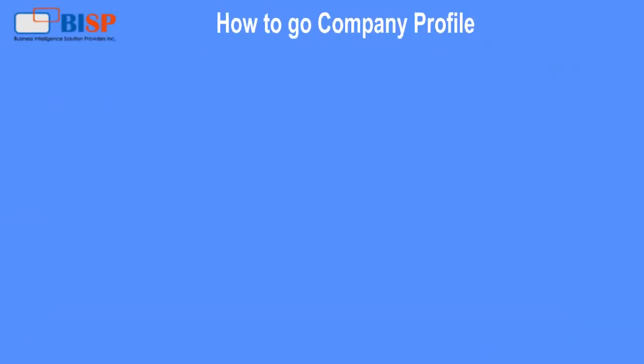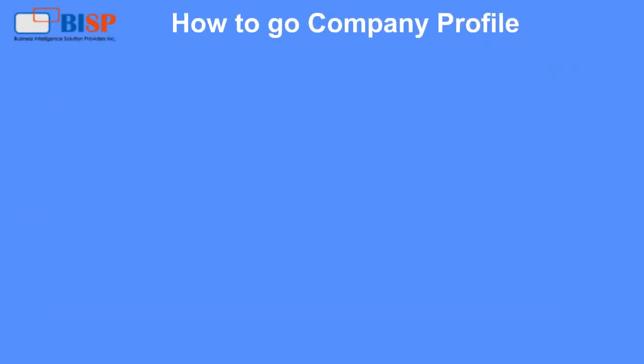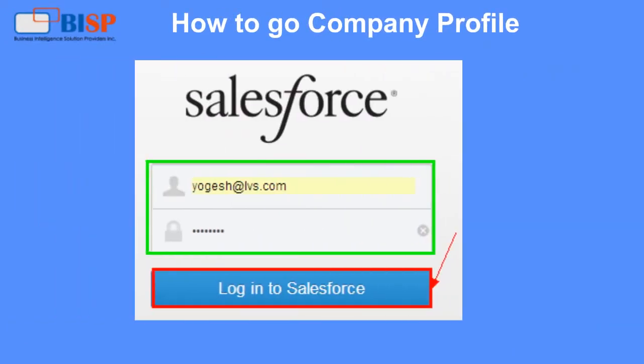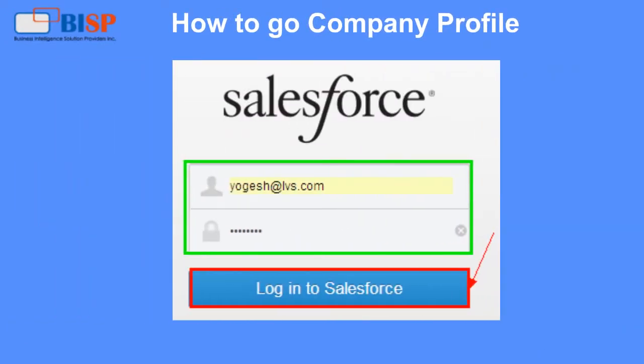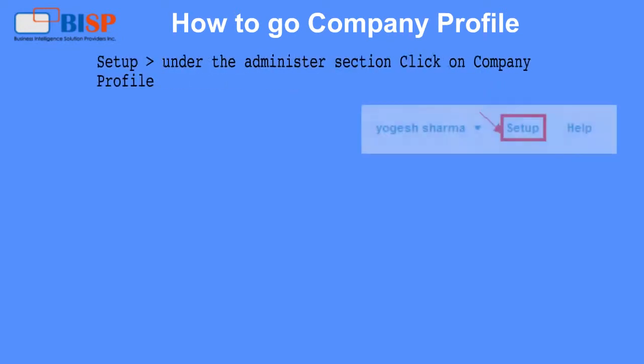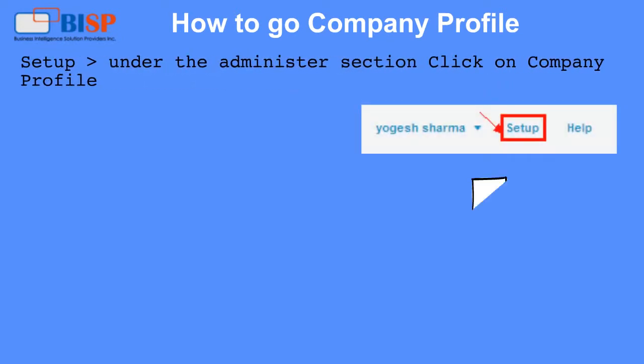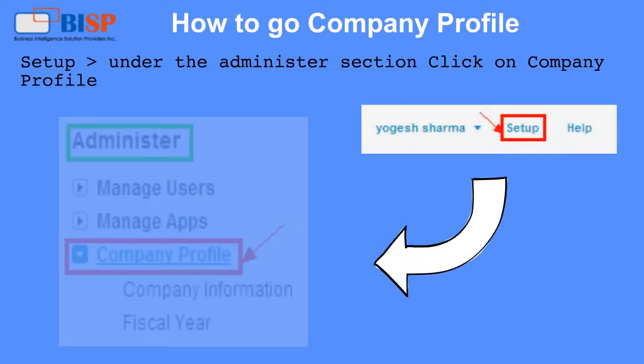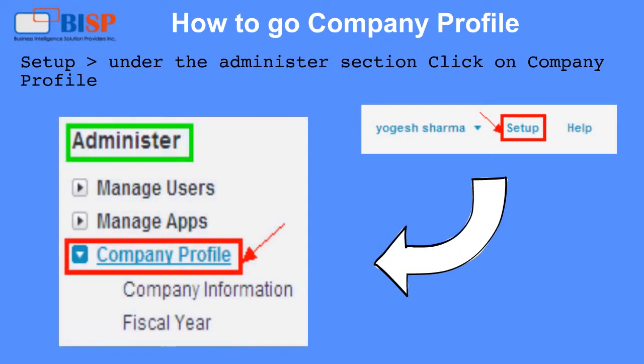How to go to company profile: Log in to your Salesforce account, then click on Setup. Under the Administer section, click on Company Profile.